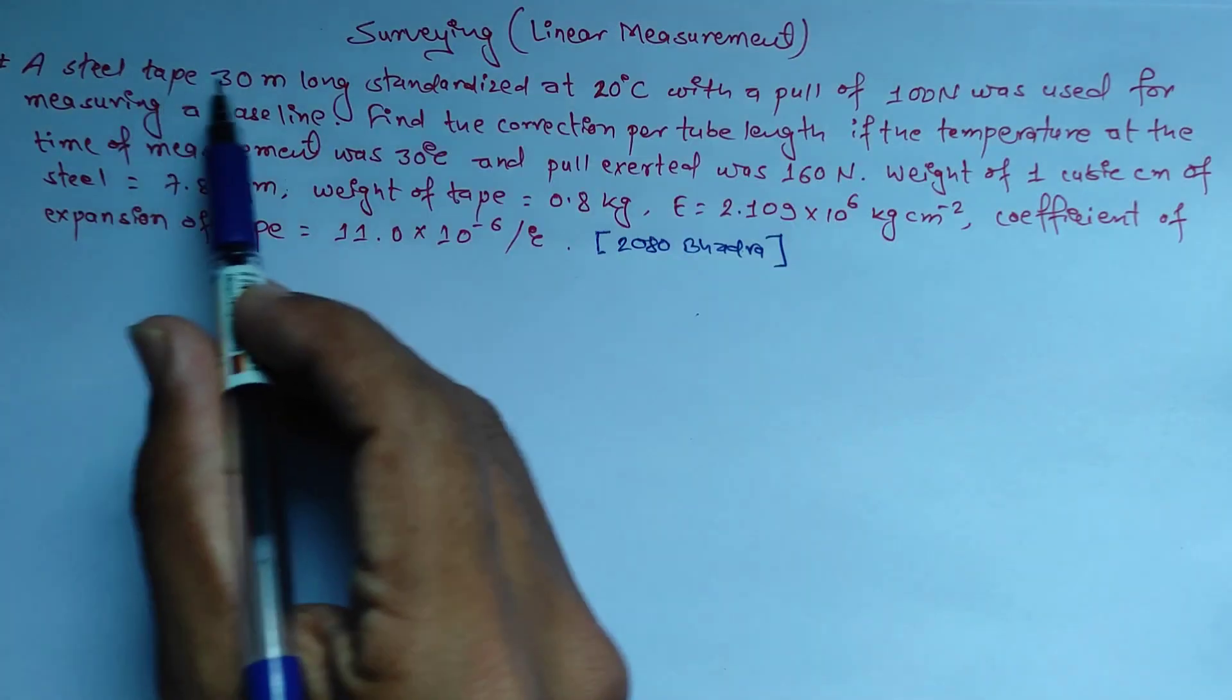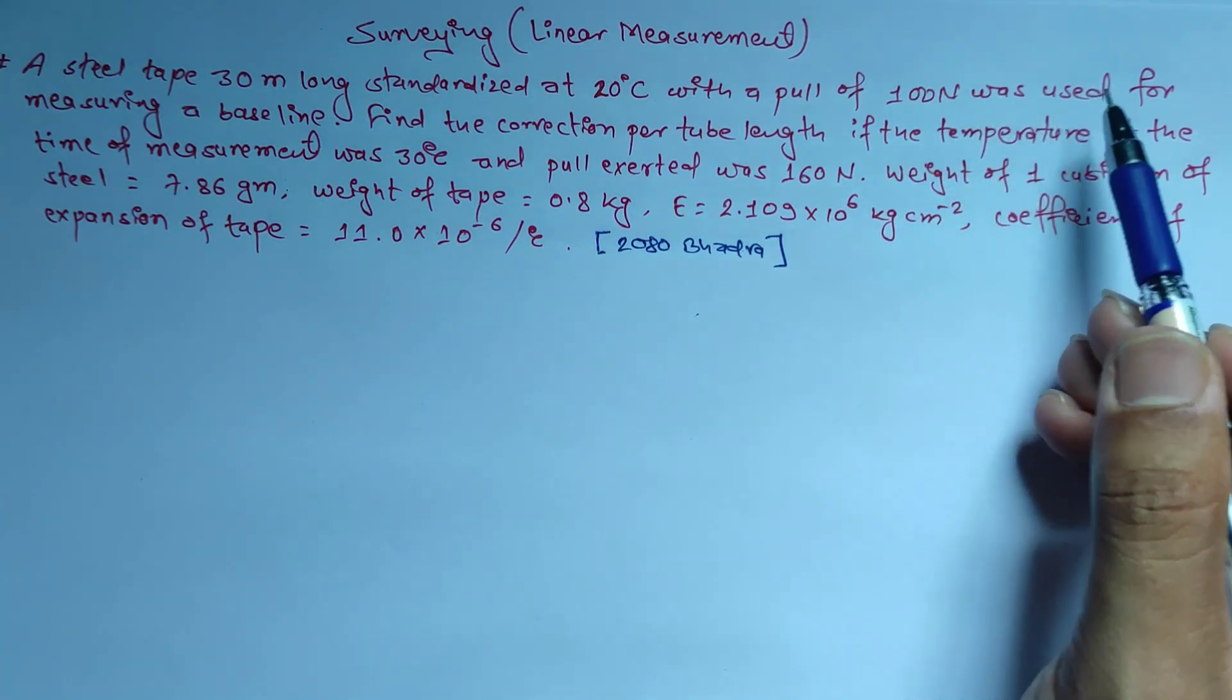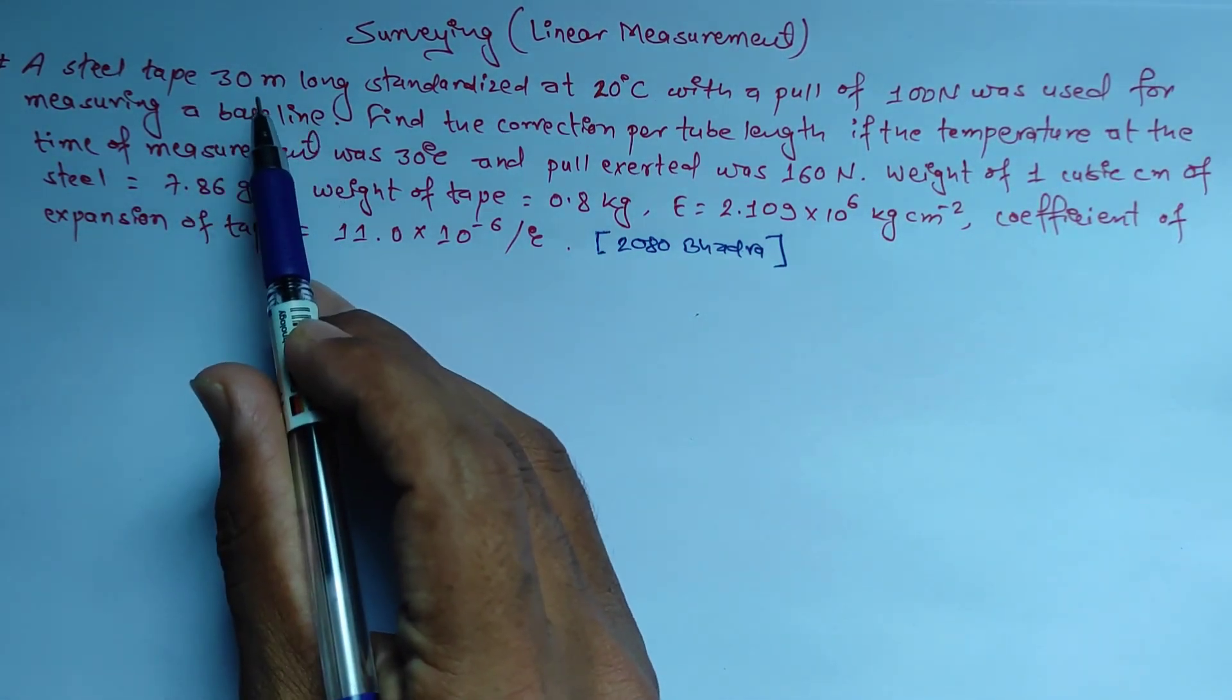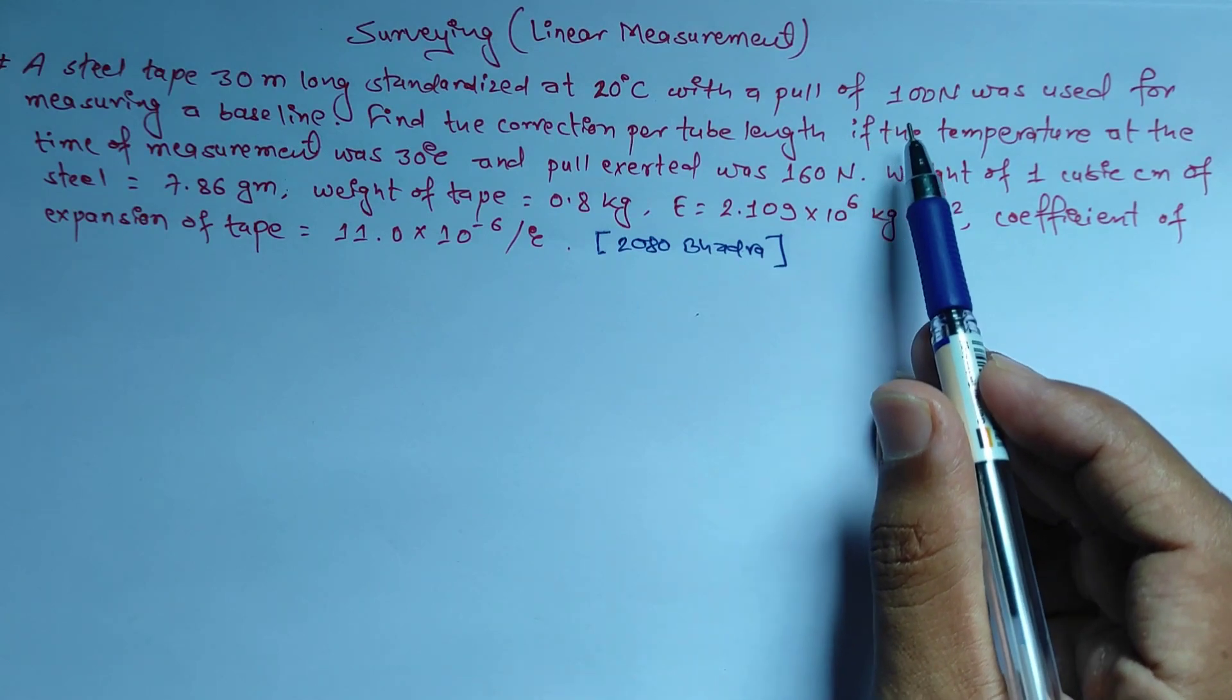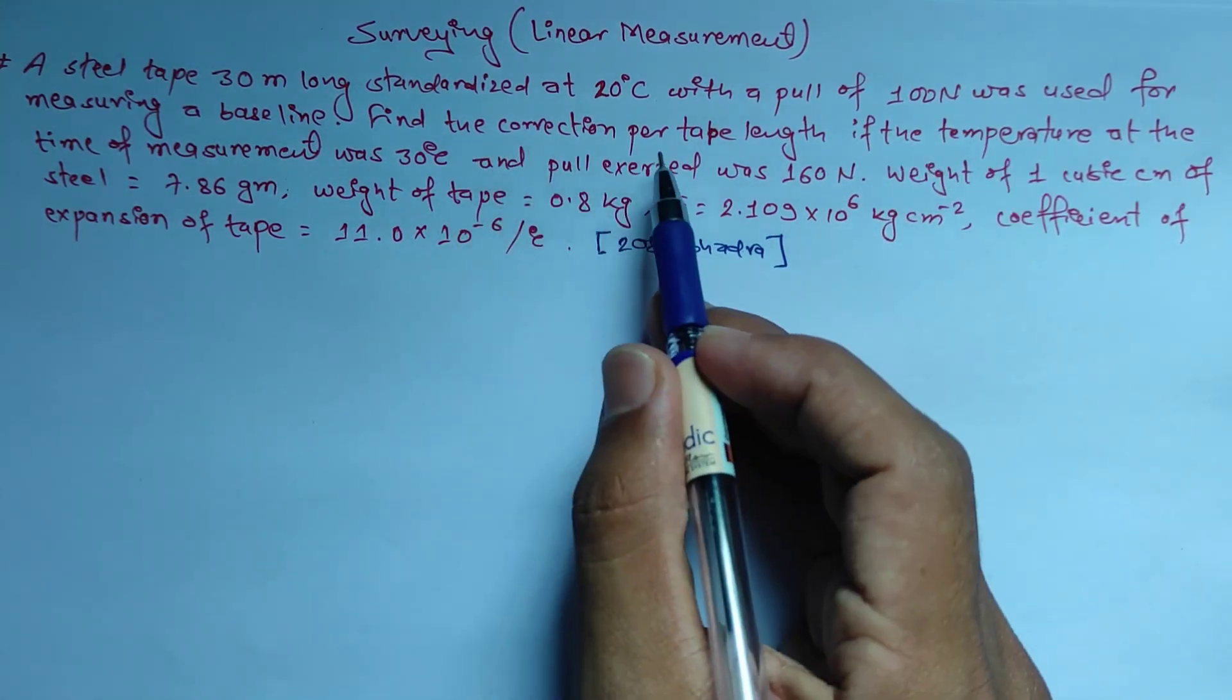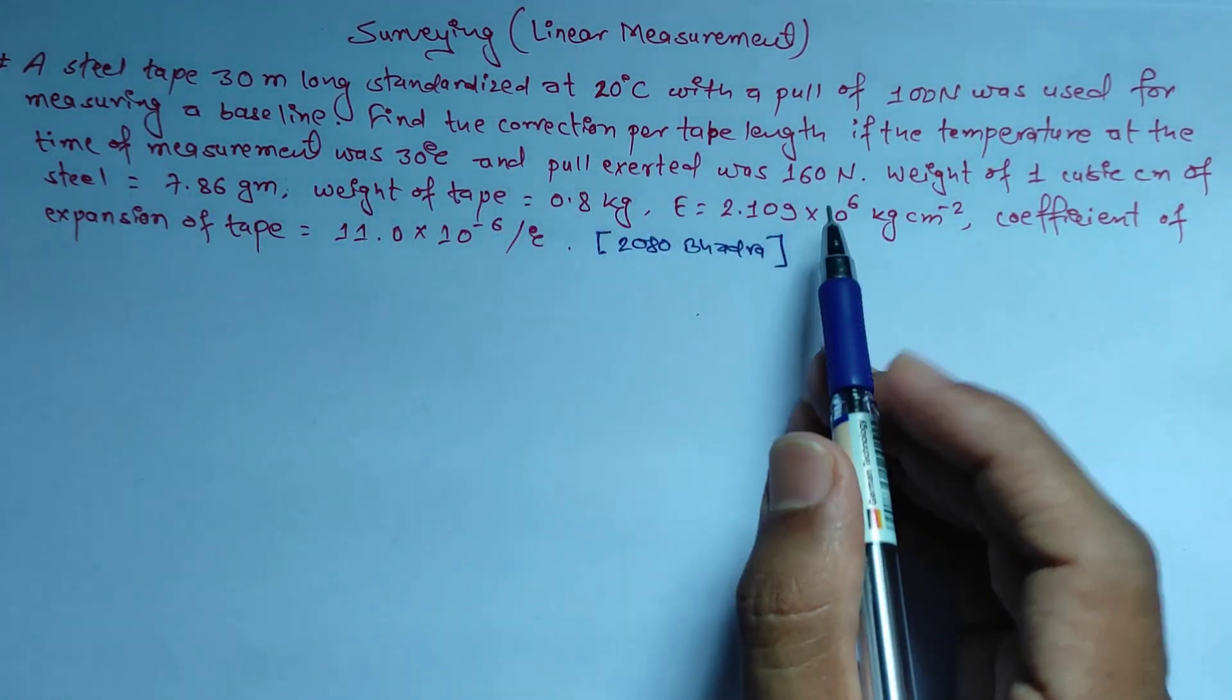The question is: a steel tape 30 meters long standardized at 20 degrees Celsius with a pull of 100 Newton was used for measuring a baseline. Find the correction per tape length if the temperature at the time of measurement was 30 degrees Celsius and the pull exerted was 160 Newton.